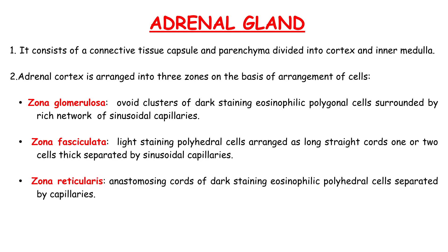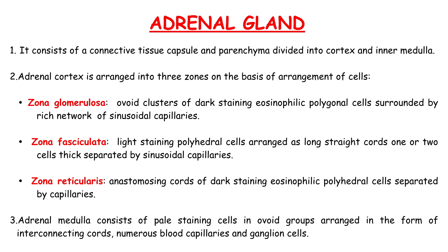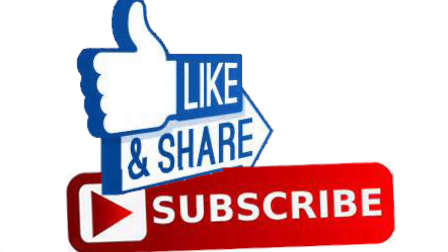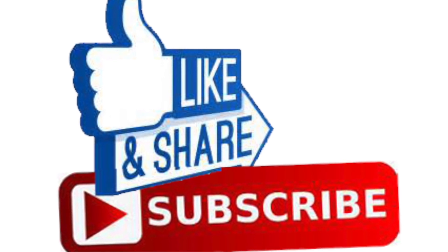Zona reticularis consists of anastomosing cords of dark staining eosinophilic polyhedral cells separated by capillaries. Adrenal medulla consists of pale staining cells in ovoid groups arranged in the form of interconnecting cords, with numerous blood capillaries and ganglion cells.